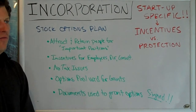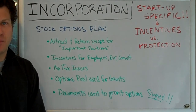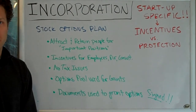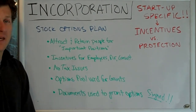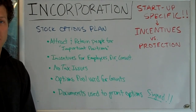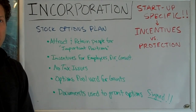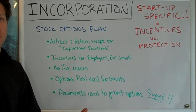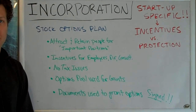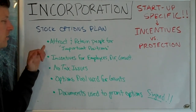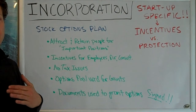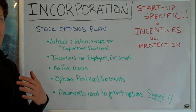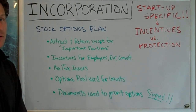Generally these are VP-level and above positions — very key people inside the company. You may give them a large options grant, say 1% of the company, that vests over time. Those options are used over the course of their vesting period to attract and retain those employees.